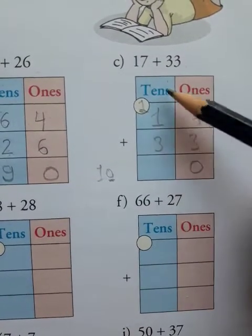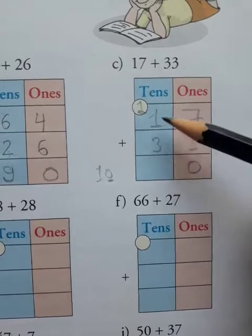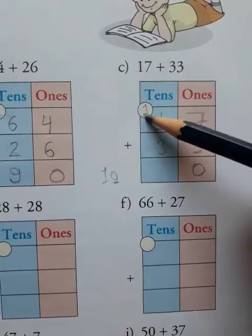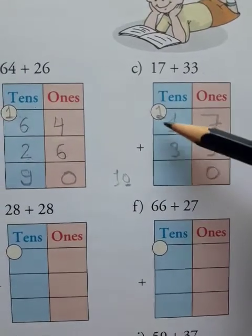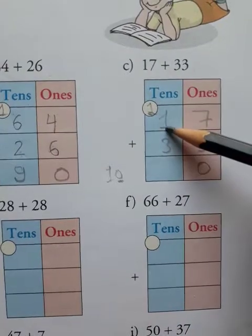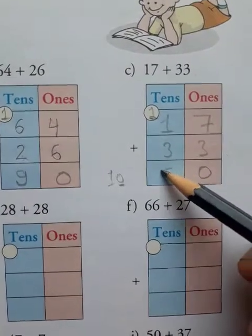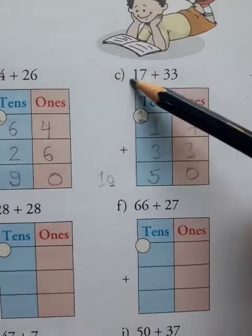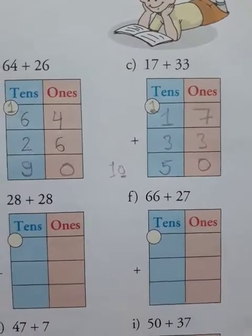Now you add the tens place: 1 ten and 3 tens. So 1 plus 3 is equal to 4. But you also add the carry over 1: so 4 plus 1 is equal to 5. So you write 5 here. It means 17 plus 33 is equal to 50.